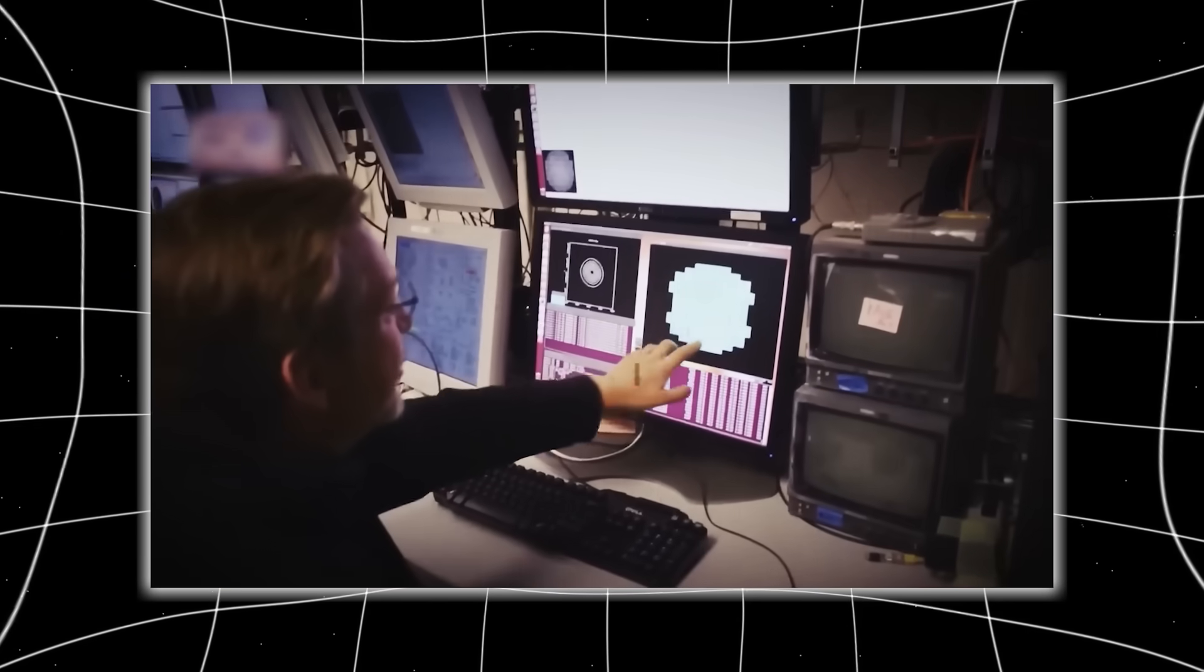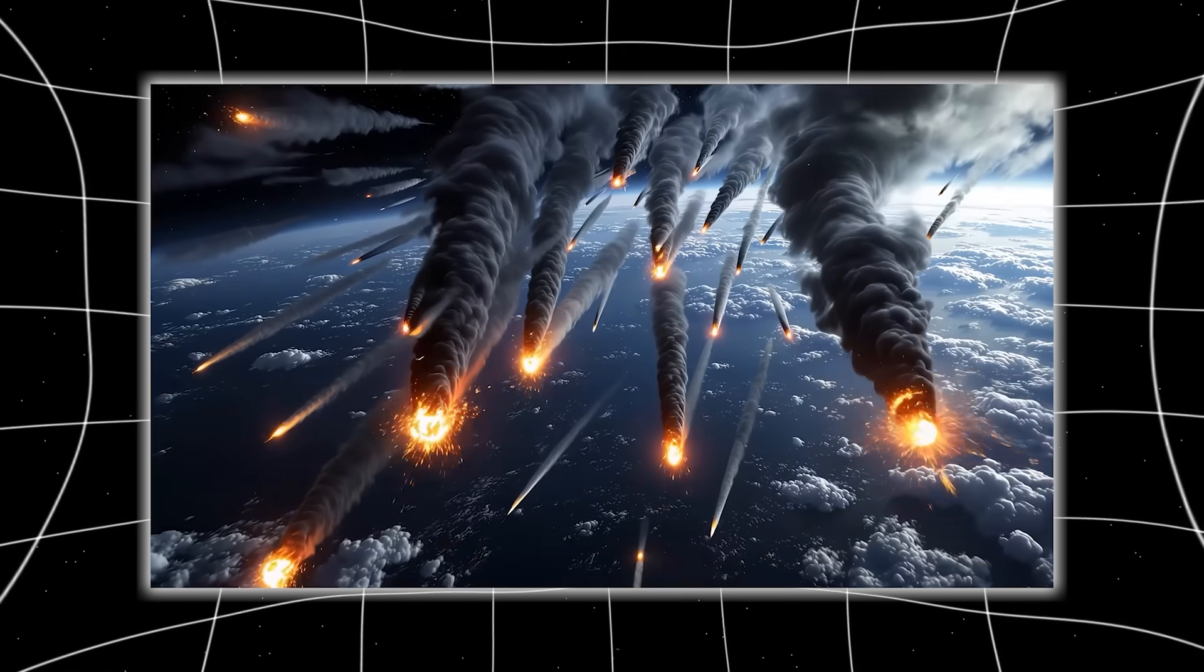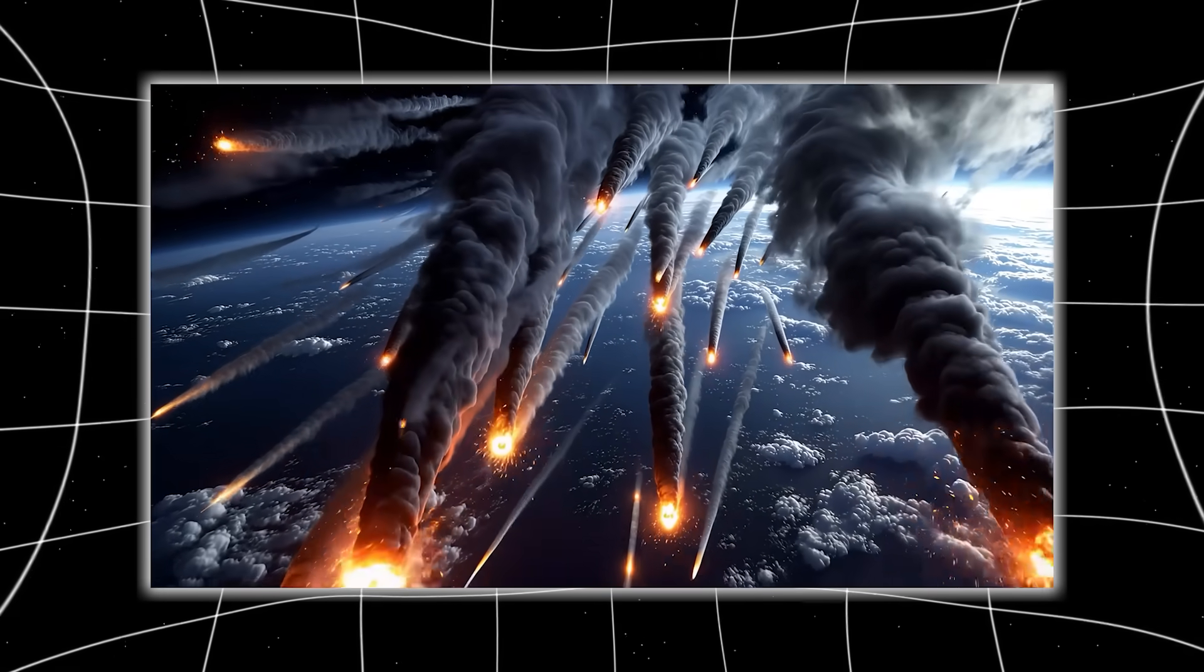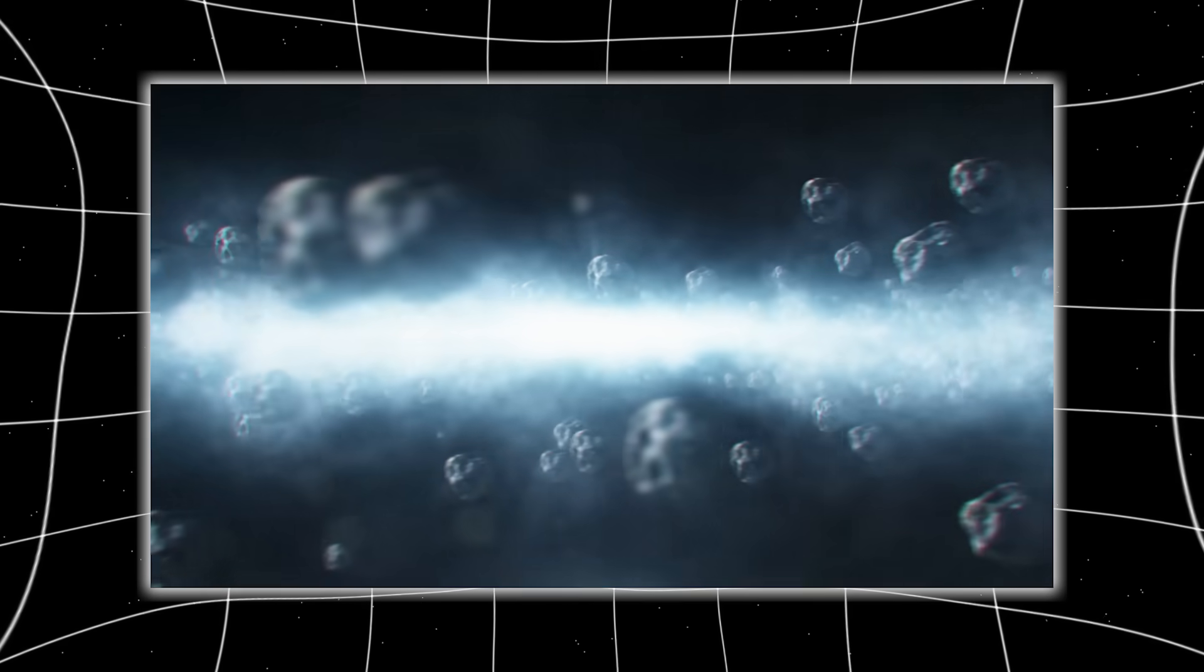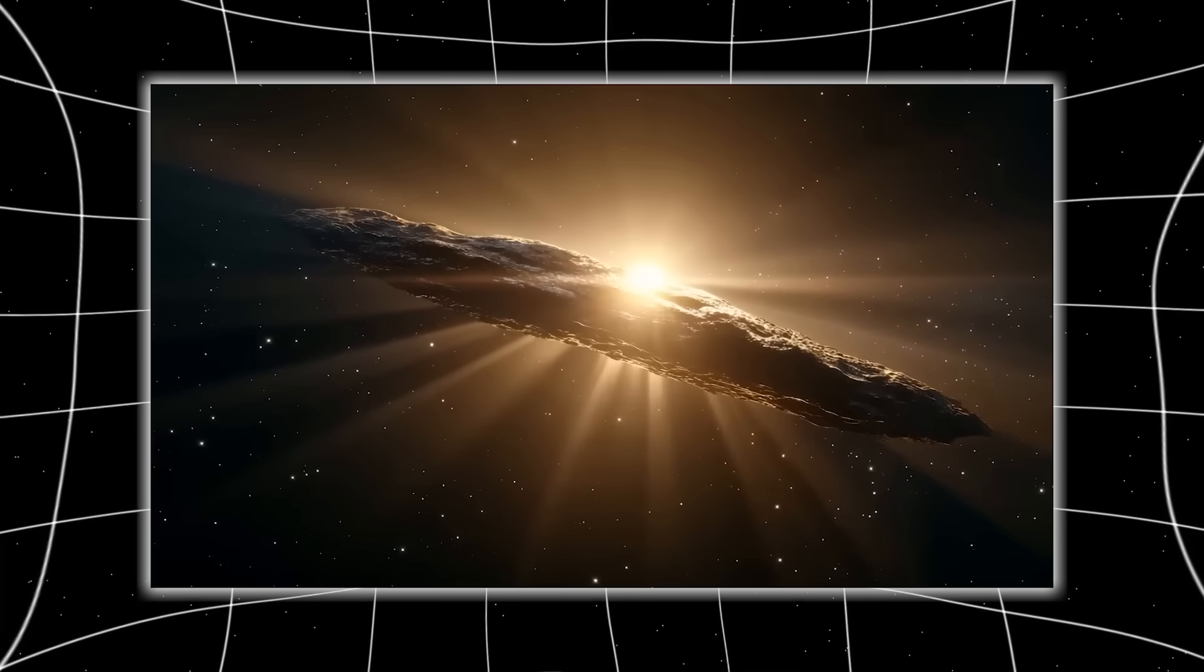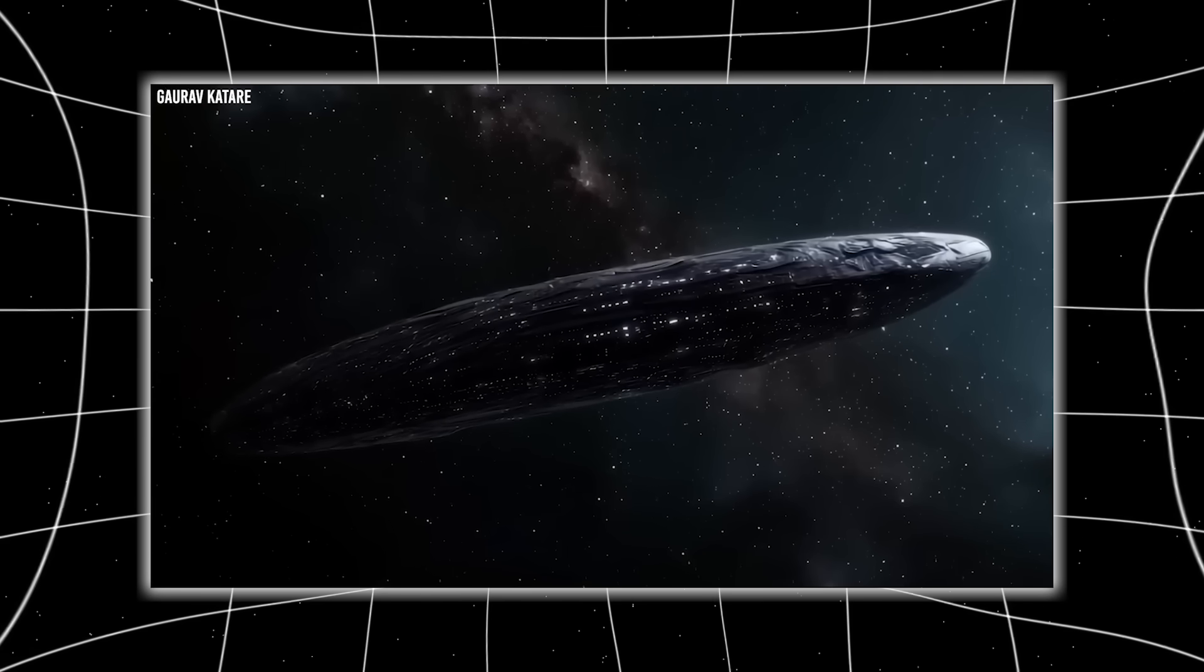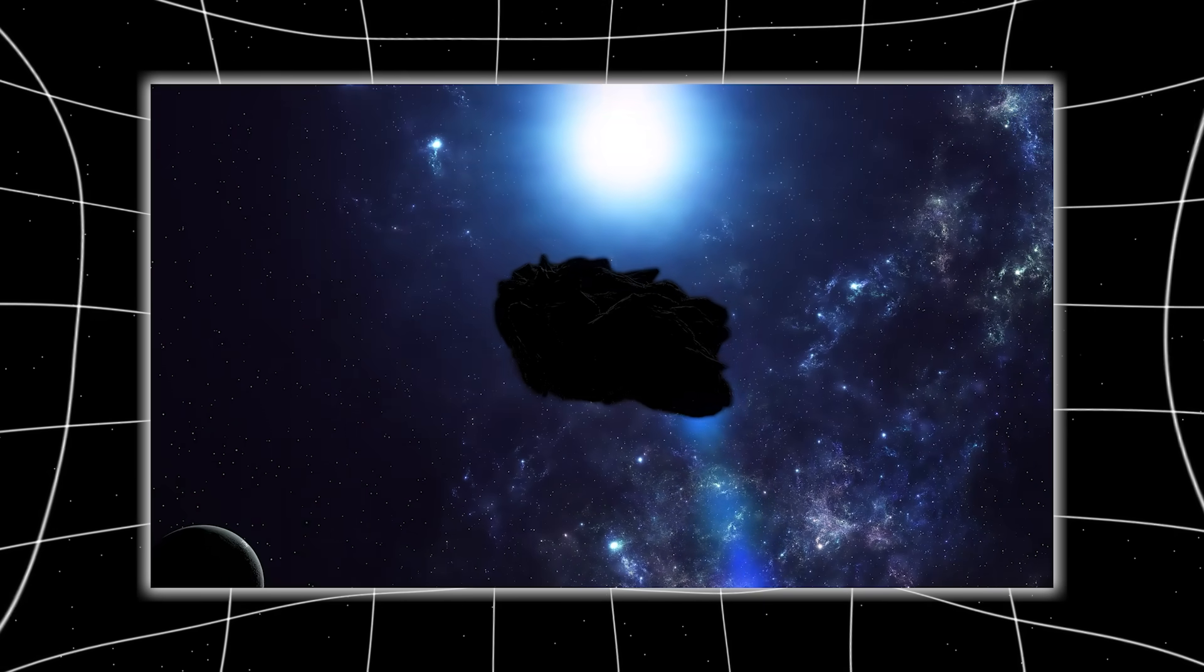But then the newest images arrived, and everything became even stranger. Because the one explanation that made sense, that 3i Atlas must be fragmenting, has now been proven false. It isn't breaking up. It isn't scattering debris. It isn't collapsing under its own mass loss. It is perfectly intact, whole, solid, singular.